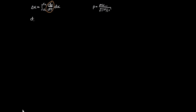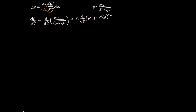We have that dp/dt is equal to the derivative of mv over the square root of 1 minus v squared on c squared. Since m is the rest mass, we can pull it out front. So we've got m times d/dt of v times (1 minus v squared on c squared) to the power of minus a half. Now I'm going to differentiate this by parts: differentiating the first part and leaving the second constant, then differentiating the second part and leaving the first constant. So this equals m times dv/dt times (1 minus v squared on c squared) to the minus a half.